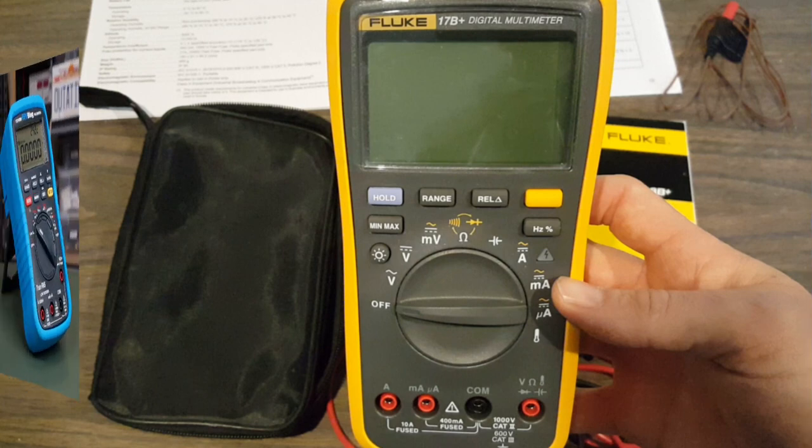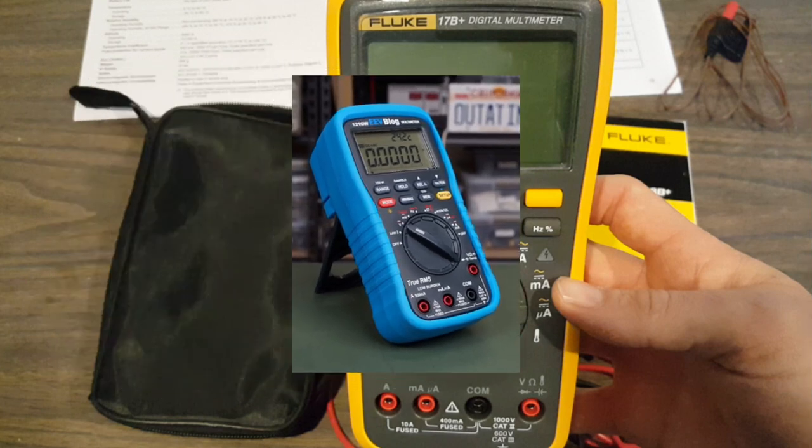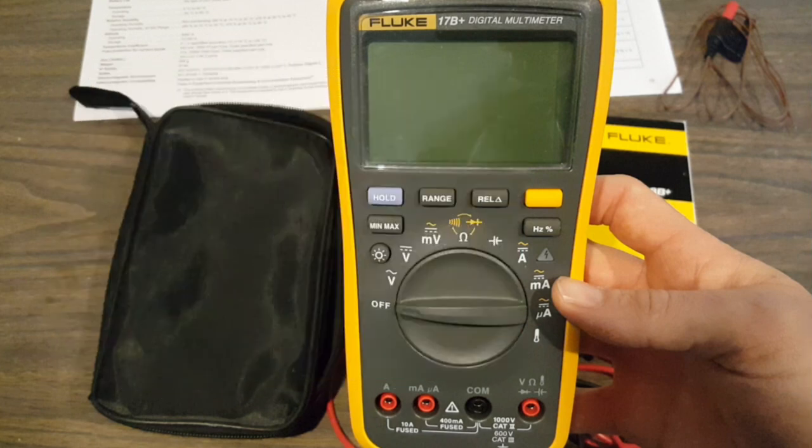Naturally, a custom meter like Dave Jones' 121 GW will provide enhanced accuracy. And, naturally, it will come at a higher price point.